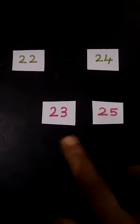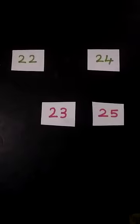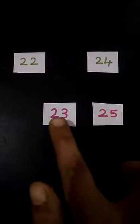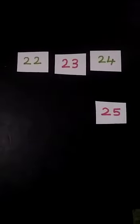So 22, here 24. Which number will be there in between 22 and 24, children? 23 or 25? You have to find out. So 22, 23, 24 — you have to count in order, right? So which number will come in between? 23. So 23 is the correct number.